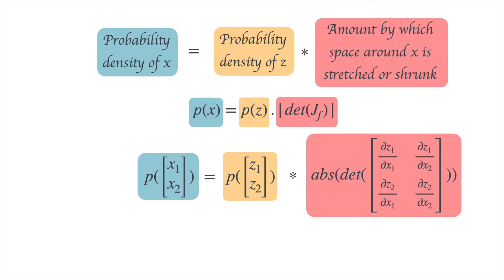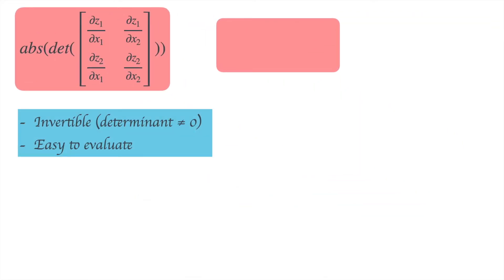We also observed that if we made Z1 to be independent of Z2, then the value of this determinant would be the product of its diagonal values, and we would like to extend this idea for multi-dimensional data.